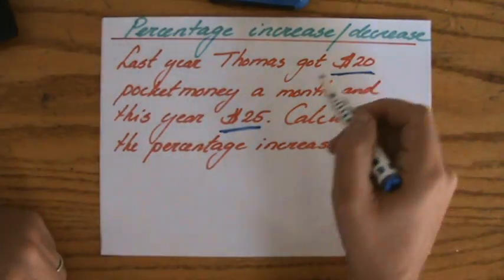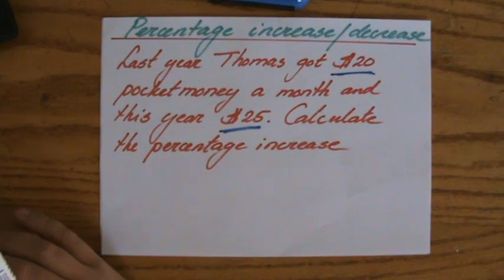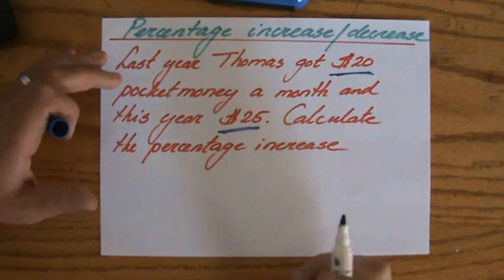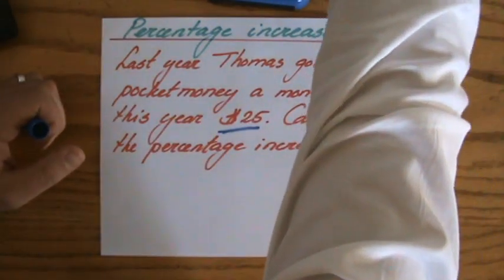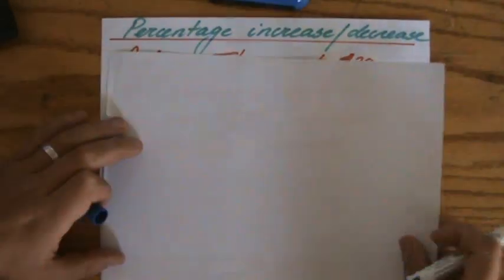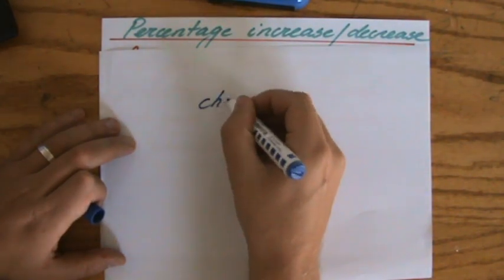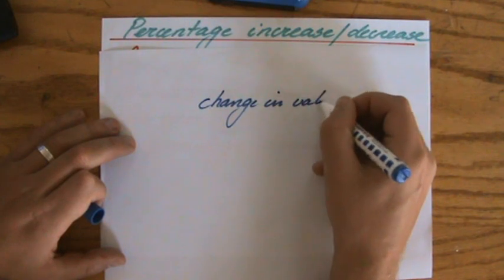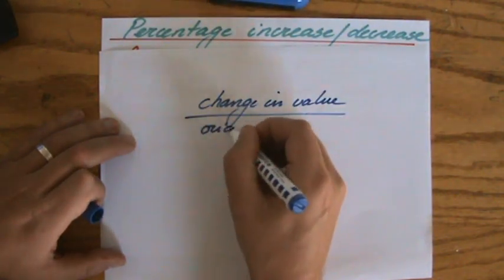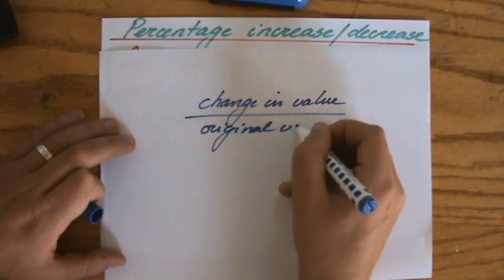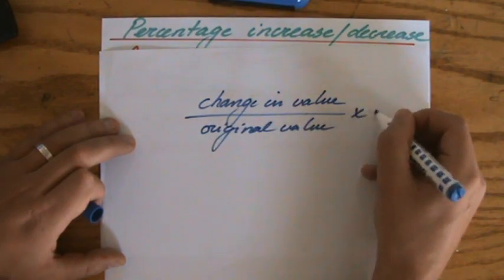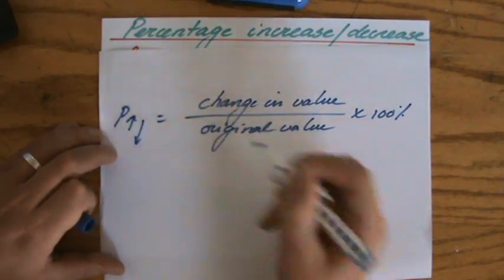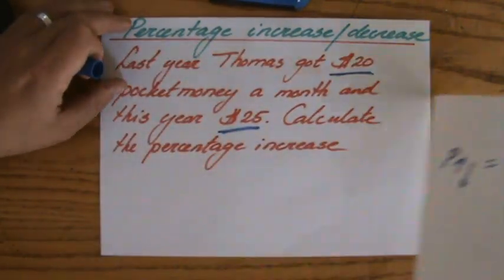Indeed, an increase there from 20 to 25. And a percentage increase or decrease, I showed you in my last video, you calculate by doing the change in value over the original value times a hundred percent to get a percentage.